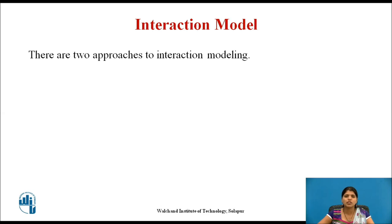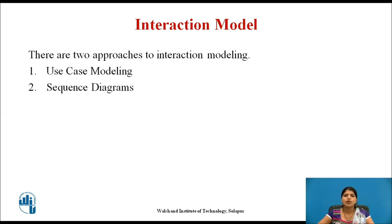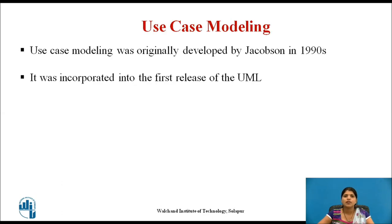It helps us understand if a proposed system structure is likely to deliver the required system performance and dependability. There are two approaches to interaction modeling: first, use case modeling, and second, sequence diagrams. Use case models and sequence diagrams present interaction at different levels of detail and so may be used together.